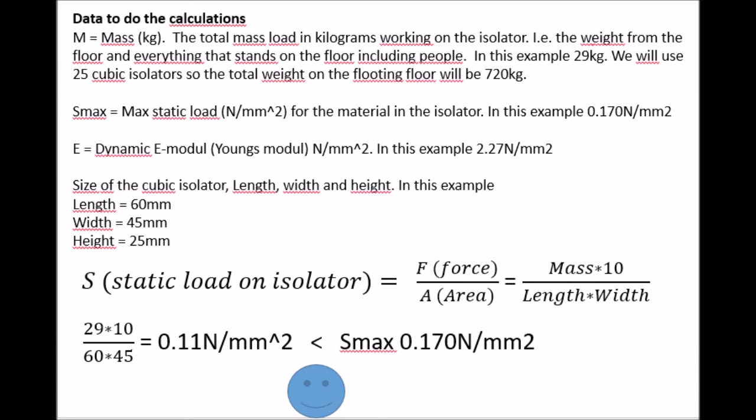Take your mass here, 29 kilograms, and multiply it with 10 to get the force in newtons, the gravity constant. And divide it with the length and the width of the isolator. The length is 60 millimeters here and the width is 45 millimeters. And then you get 0.11 newton per square millimeters. That is the static load on the isolator. Then finally you have to compare your calculated static load with your maximum static load. In this case 0.11 is smaller than 0.17, which is okay then.